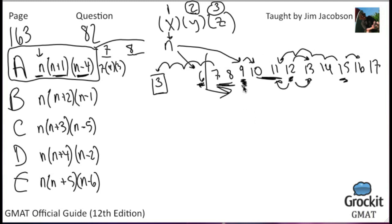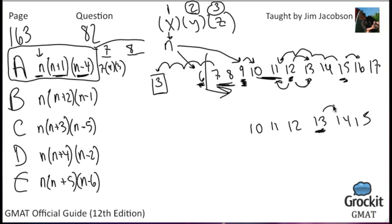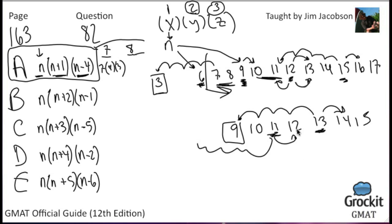To recap: choice A covers every possible case — multiples of 3, numbers one more than a multiple of 3, and numbers one less than a multiple of 3, for all N greater than 6. You can verify either by mathematical reasoning or by picking test values like 7 and 8. That's enough for question 82.